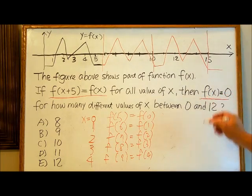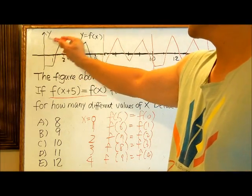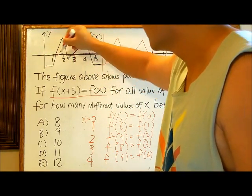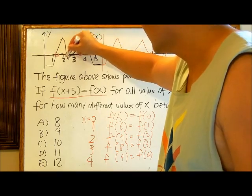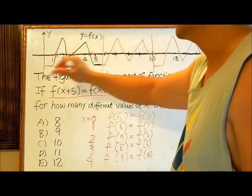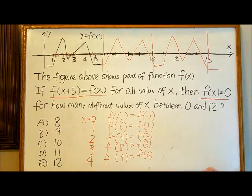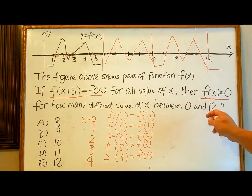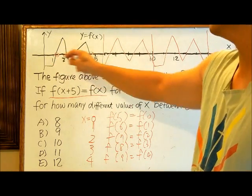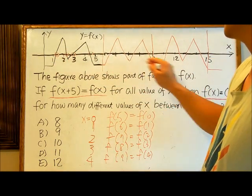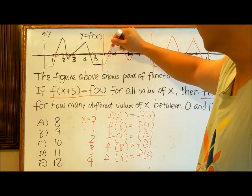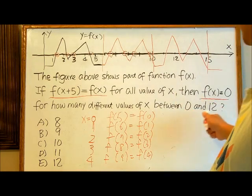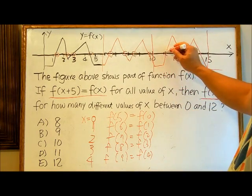Now we need to find when f of x equals 0 — that is, when y equals 0. Looking at the graph, there is this point, this point, this point, this point, and this point from 0 to 5. He wants to know how many x values satisfy this between 0 and 12. From 0 to 5 there are four points, and from 5 to 10 there will be exactly another four points.